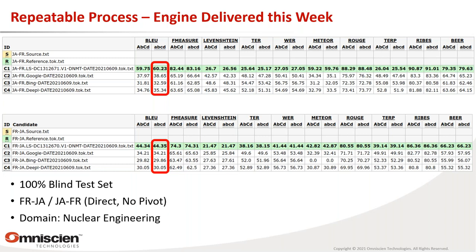One engine we delivered this week was French-Japanese, direct with no English pivot, in the nuclear engineering domain. For Japanese to French we scored a BLEU of 60, versus Google's 38, Bing's 32, and DeepL's 35. French to Japanese: we got 44, versus Google 34, Bing 29, DeepL 30. All other metrics — F-measure, Levenshtein, RIBES, and ROUGE — all show a substantial and consistent difference. To build this engine, we had just over 20 million direct industry sentences per direction and only 4,500 client sentences, requiring heavy data synthesis.